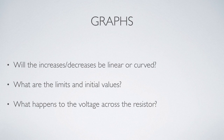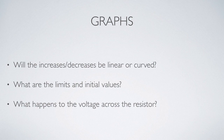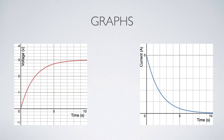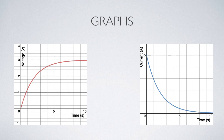Will these increases and decreases be linear or curved functions? What are the initial values and final limits for these variables, and what happens to delta V across the resistor as charging occurs? We know that the rate at which charge is added to the capacitor is inversely related to the amount of charge already there. When rates are proportional to values, we get exponential functions — so charge and delta V across the capacitor approach an asymptote from below, while current approaches an asymptote of zero.